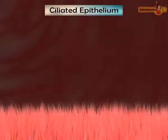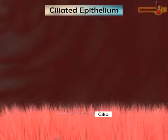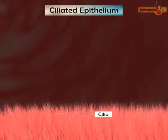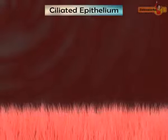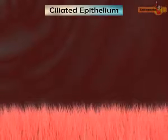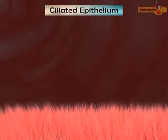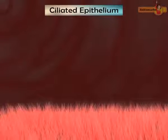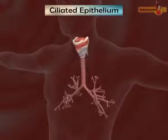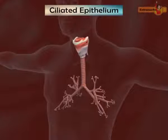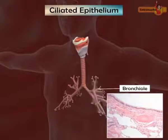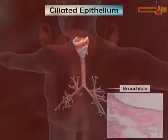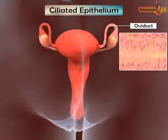Columnar and cuboidal epithelium, if they bear cilia on their free surface, are known as ciliated epithelium. Cilia are thread-like protoplasmic projections that help in the movement of particles or substances in a specific direction over the epithelium. Ciliated epithelium is located at the inner lining of the bronchioles and oviducts.